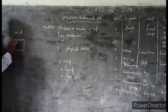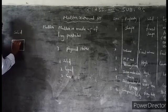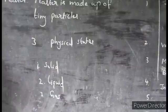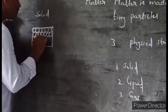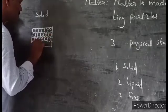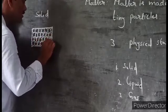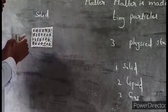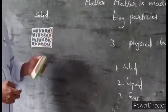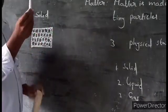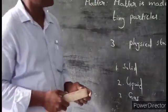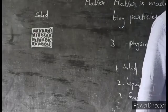In the solid state, the molecules are arranged very closely together. This is the property of solids — molecules are arranged very closely. For example, chalk has a cylindrical shape, and a duster has a rectangular shape. That means a solid has a fixed shape.